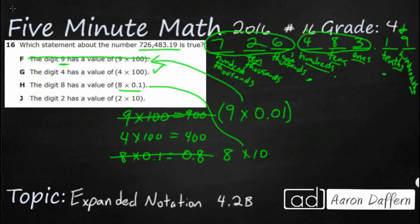So J is going to be: 2 is ten-thousands, and they want 2 × 10. That's ten—that's twenty. I need twenty thousand, not twenty. So my answer is G.